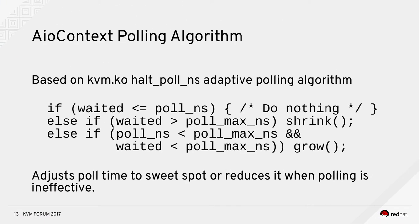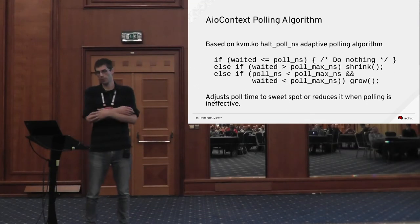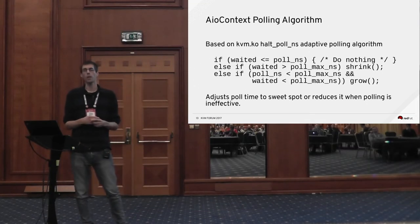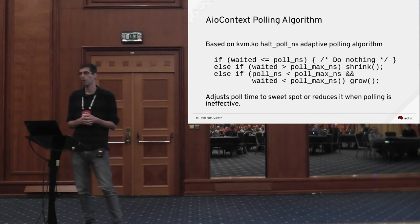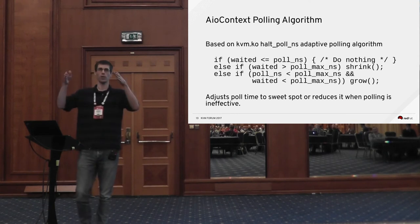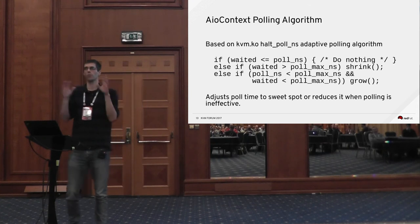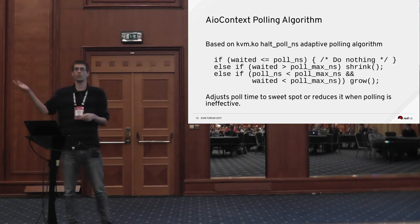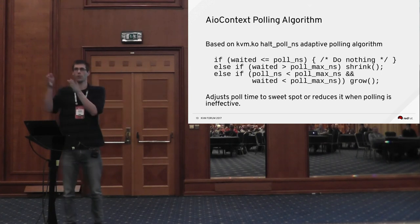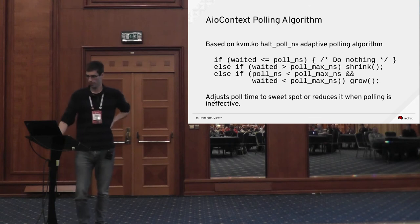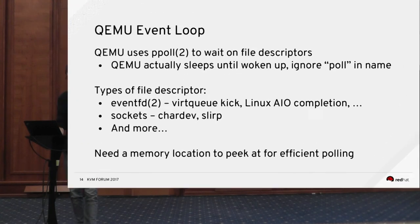In QEMU we've implemented a polling algorithm in the event loop. It's based on the same approach as the KVM kernel module's HaltPollNS algorithm — it tries to find a sweet spot and stay there, but if behavior changes it will scale back polling if it's not effective, or find a new sweet spot.